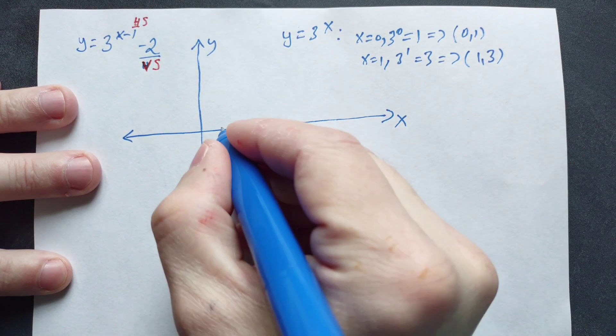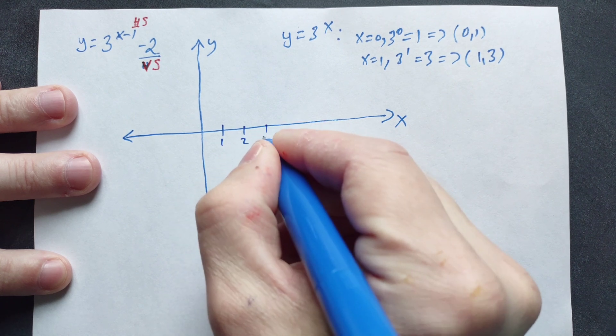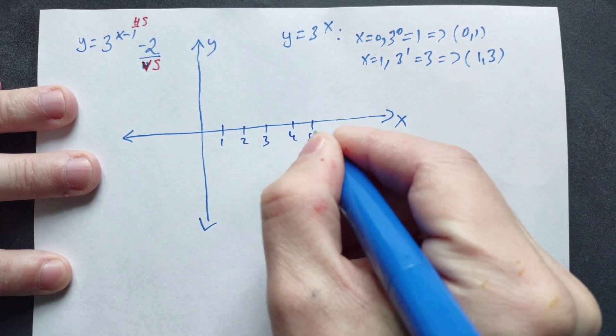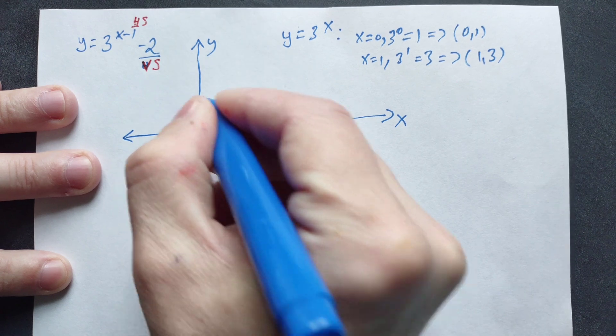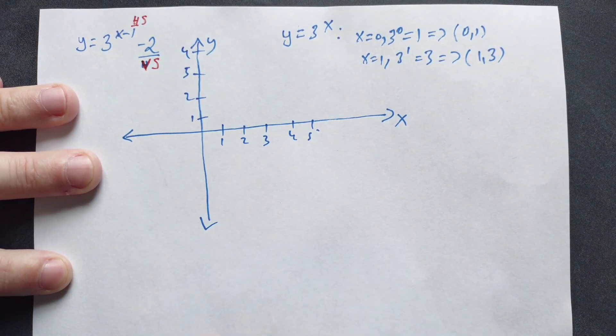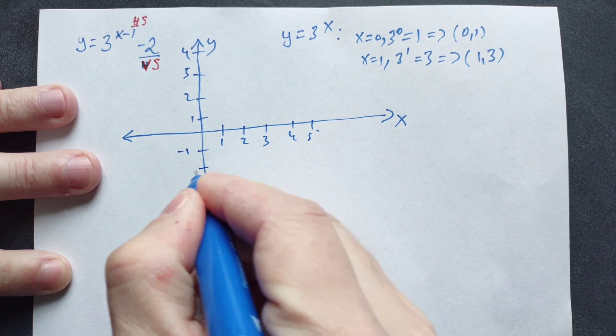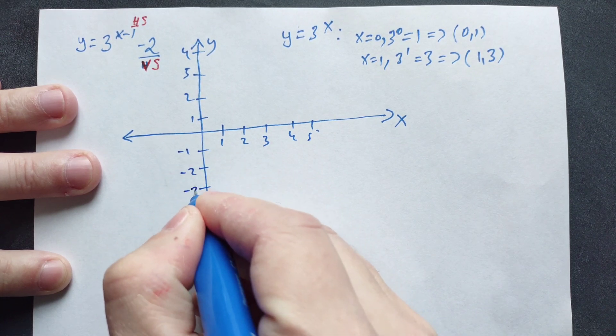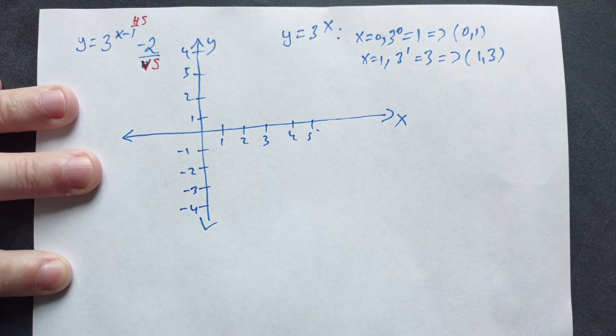Mark these points. So say this is 1, 2, 3, 4, 5. Count by the same spaces. So about 1, 2, 3, 4. Count down: negative 1, negative 2, negative 3, negative 4, and so on.